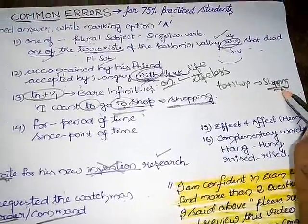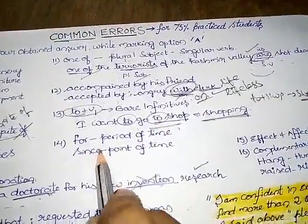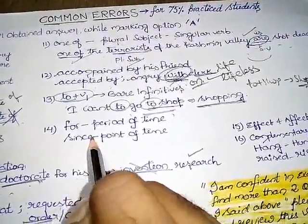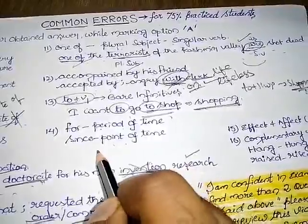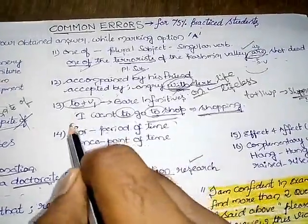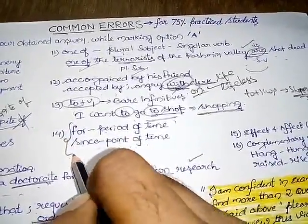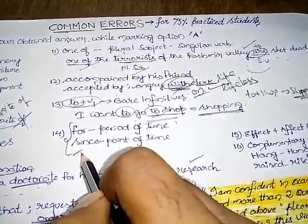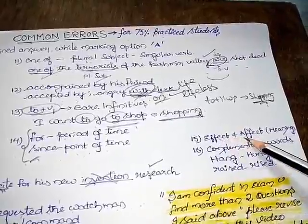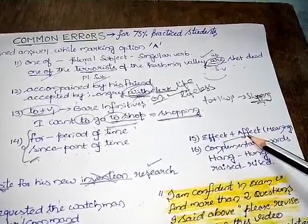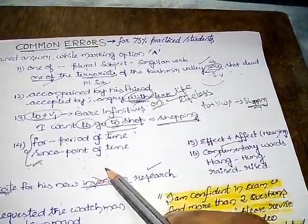Next, you have to know the difference between for and since. For means period of time, and since means the point of time. Let's clarify the difference between for and since and also the one affect and effect. Know the meaning of affect and effect.